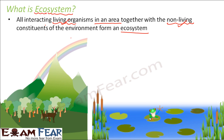Similarly, there can be many other examples. Here you see a forest — even a forest is an example of an ecosystem because here also you see a lot of living organisms in a particular area. In that area, you have living organisms and non-living organisms, and they both interact with each other. So the forest is also an example of an ecosystem.